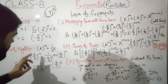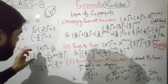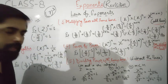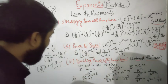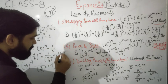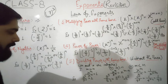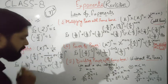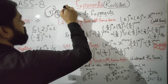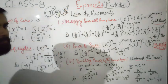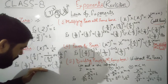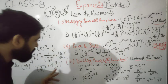If the number is given in a fraction form, such as a upon b raised to the power minus n, that equals one upon (a upon b) to the power n. You can also write it as b upon a raised to the power n. For example, 3 upon 7 raised to the power minus 2 equals one upon (3 upon 7) squared, or equivalently 7 upon 3 raised to the power 2. Both methods are valid.